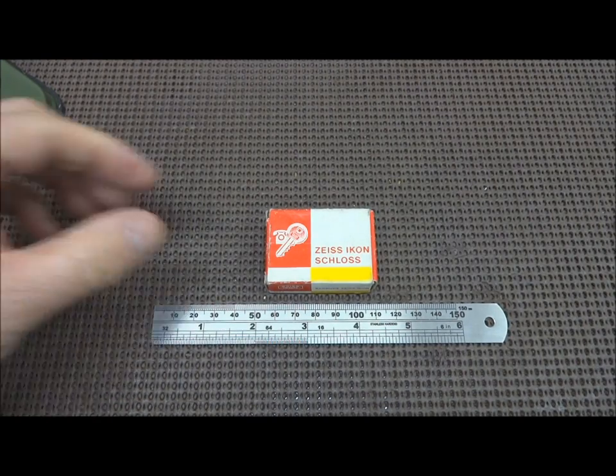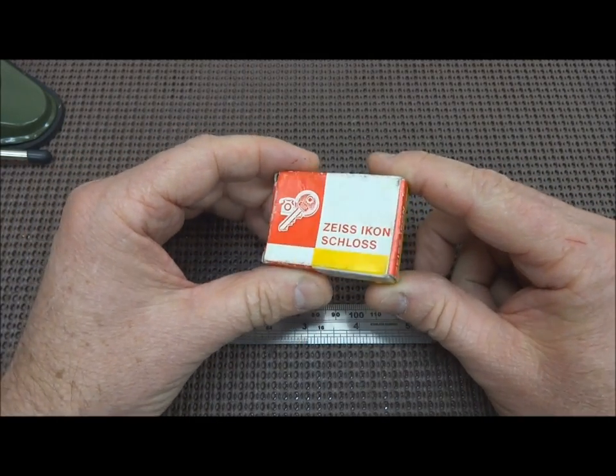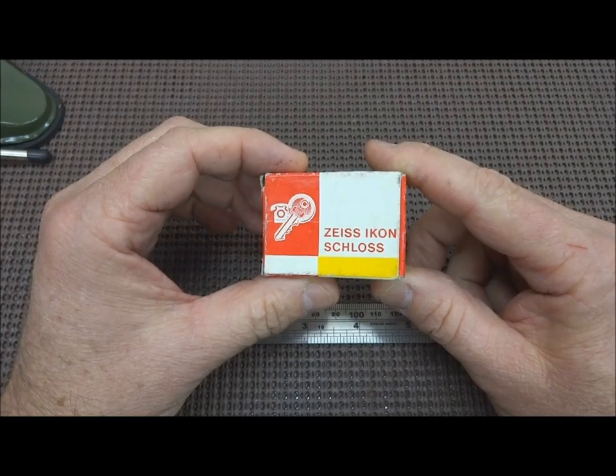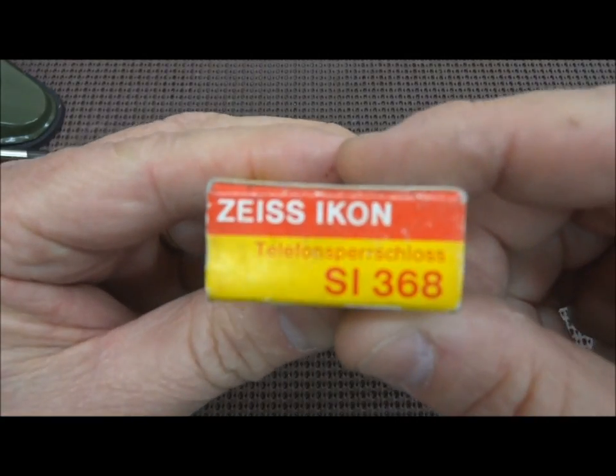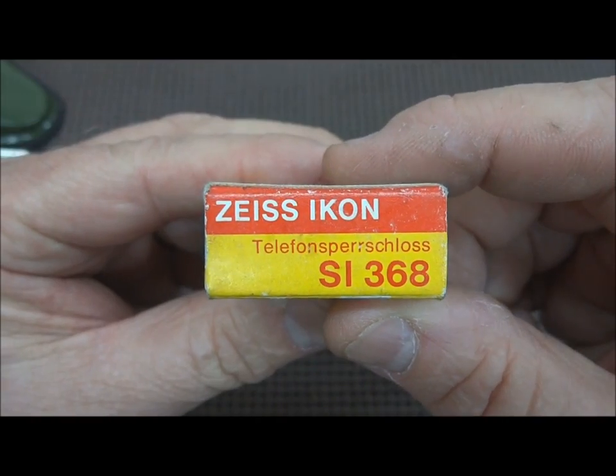Hey guys, I'd like to show you one of the smallest locks I've ever been given. Adrian Weber gave me this. This is a Zeiss Ikon Telefonsperschloss, which means telephone blocking lock.